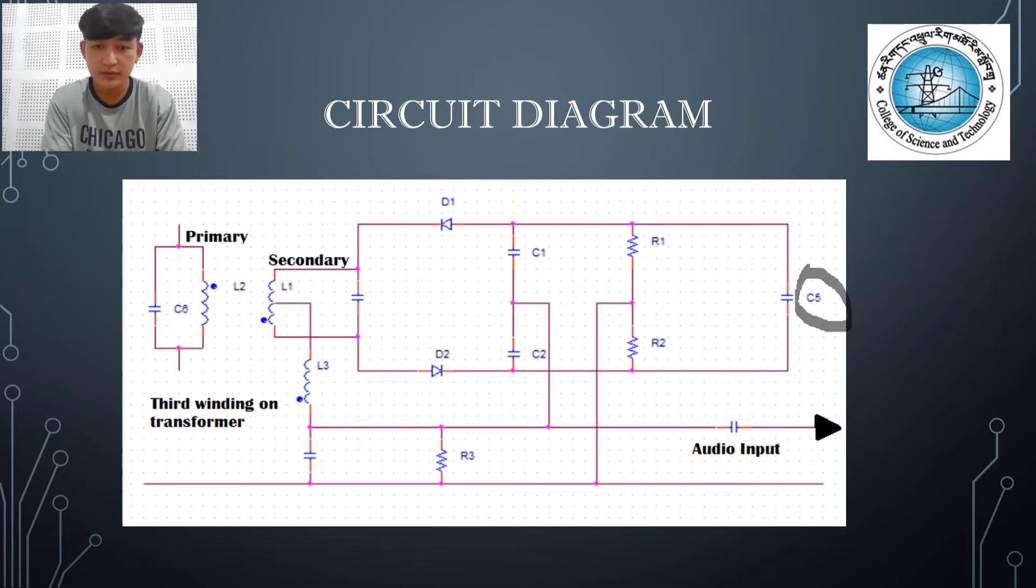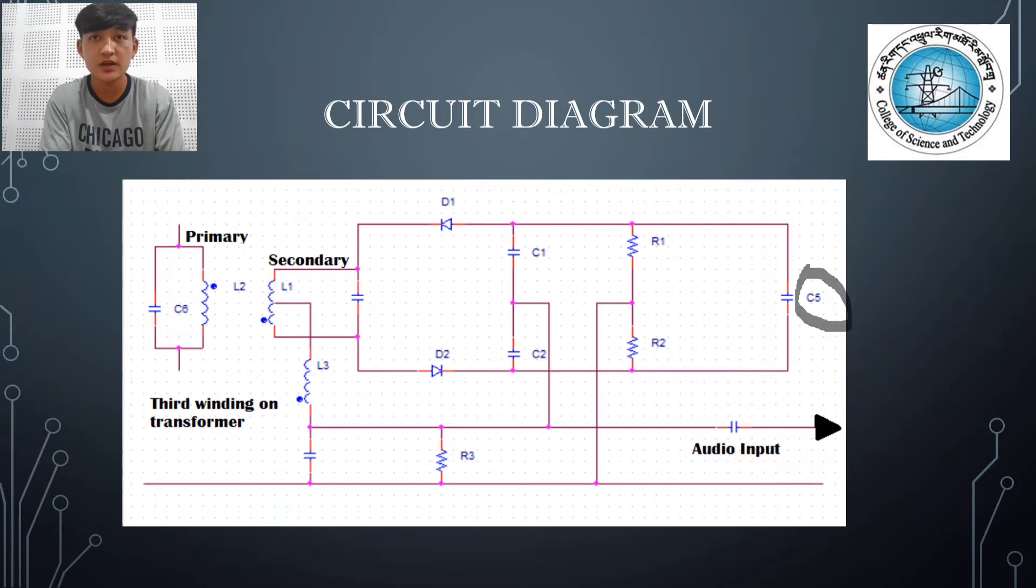This allows it to provide a greater level of noise immunity, as most noise is amplitude-based, and it also enables the circuit to operate satisfactorily with low levels of limiting in the preceding IF stages of the receiver.